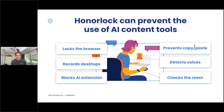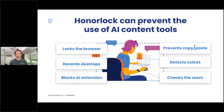Honorlock does speech detection, which includes keywords. There are voice-activated AI applications leveraging ChatGPT where you don't have to type — you can just speak to it. With our keyword detection, we're going to be listening for key phrases that activate those AI tools, and then flag that and get our proctor involved quickly to get the student back on track.